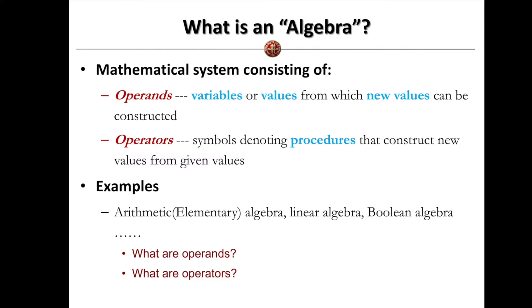What is algebra? We have learned different kinds of algebras before. To answer this question, you need to know what a mathematical system for algebra is. Generally, the mathematical system of algebra consists of two main parts. The first part is operands — variables or values from which new values can be created and constructed. The second part is operators — symbols representing procedures that construct new values from given operands. We have learned different algebras: elementary algebra, linear algebra, and Boolean algebra. We can compare them to see what the operands and operators are.